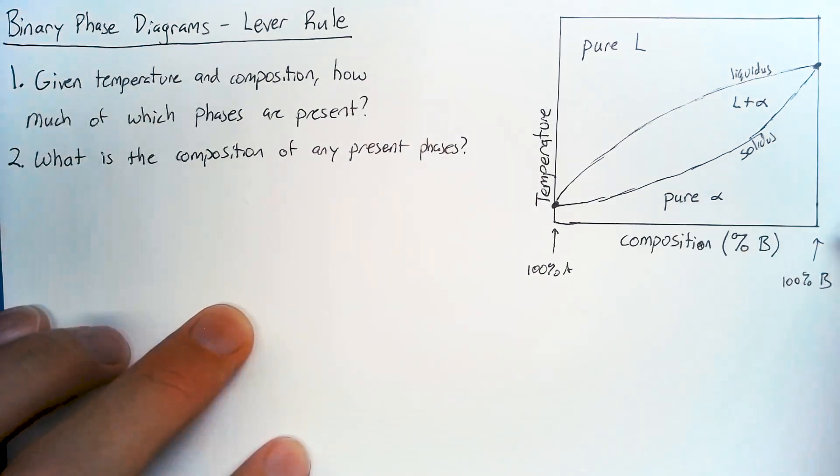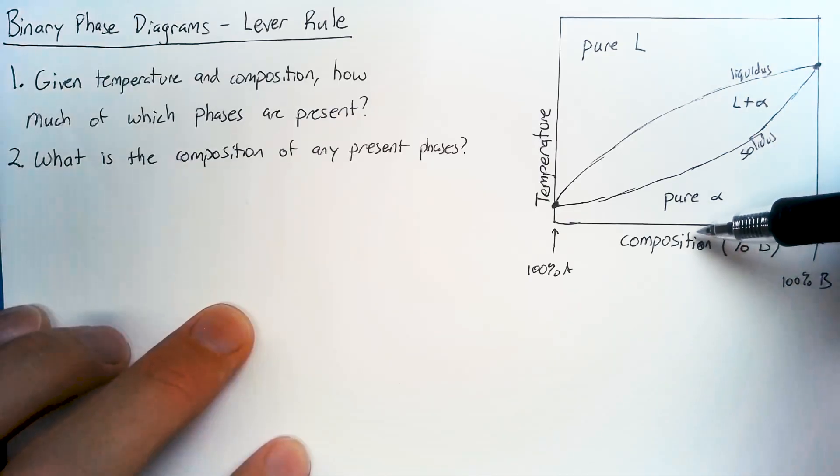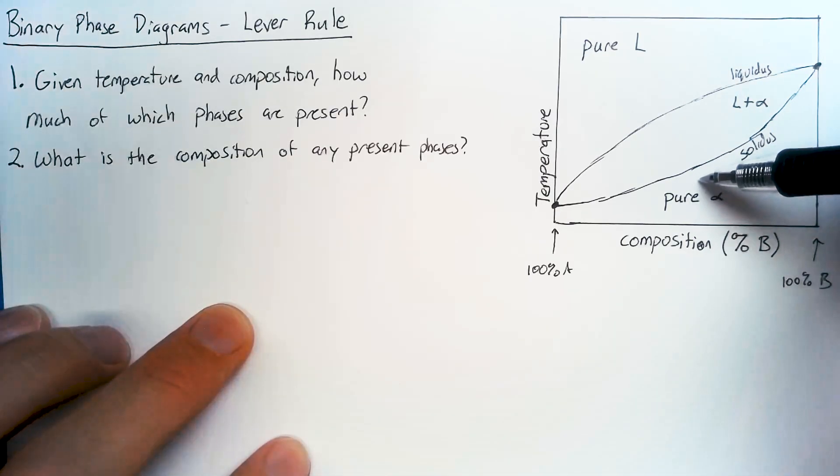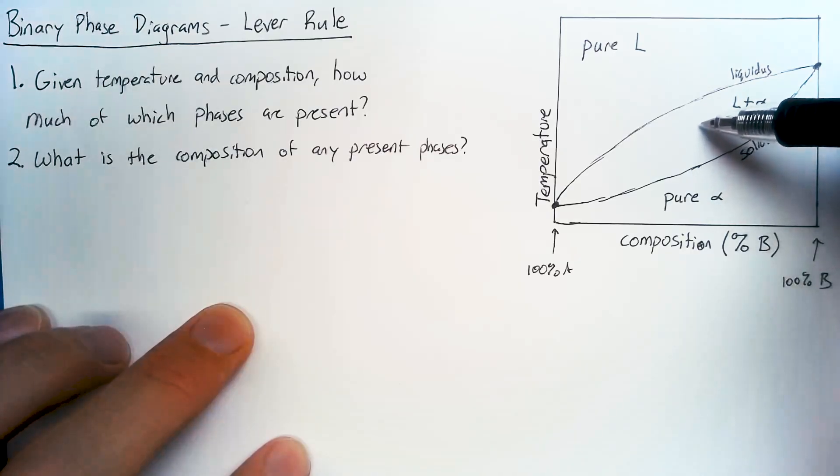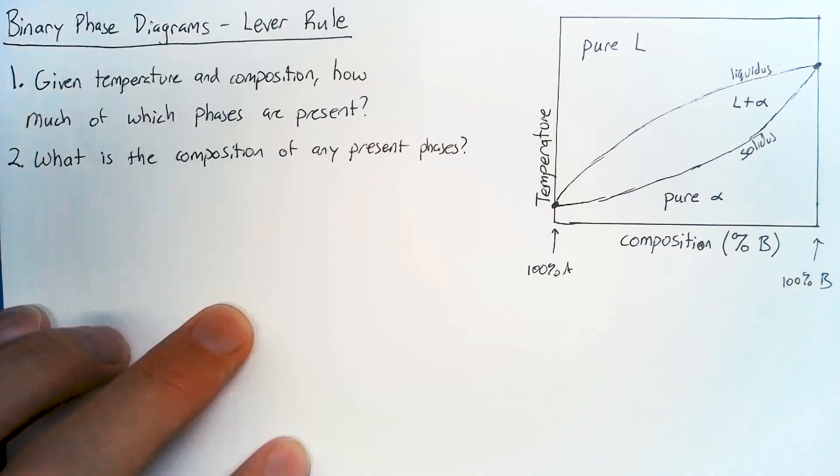Now if you have a pure material, like pure A or pure B, you notice that the liquidus and solidus lines meet. And really what that means is that you have to melt all of B before you can increase the temperature anymore. But if you have a mixture of materials, if we have A and B together, we're going to have a gradual melting of the two materials. That's what ends up happening.